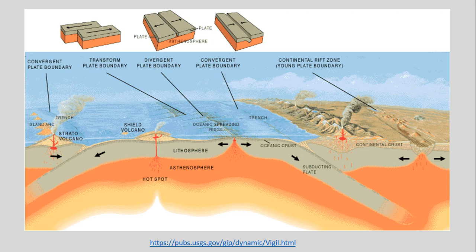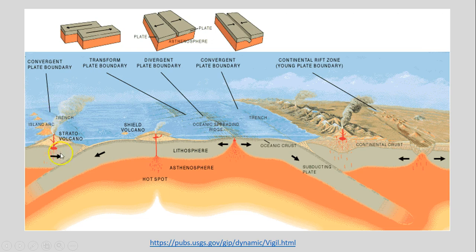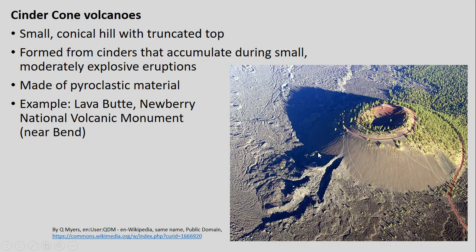Just to bring us back to a broader scale, looking at different types of plate boundaries where we see these different types of volcanism: we've talked about the continental rift zone and the hotspot with its shield volcano example. We'll also be talking about our convergent boundaries — both in terms of two oceanic boundaries coming together, as well as oceanic meeting continental crust — and the different volcanoes created because of that.